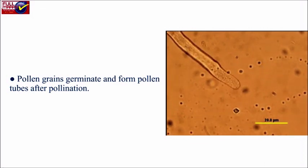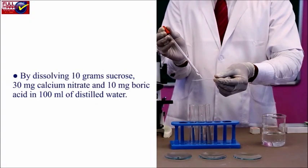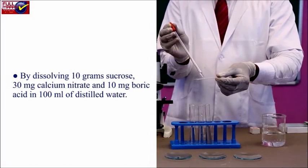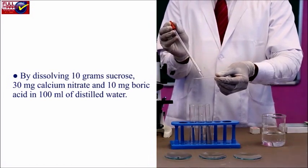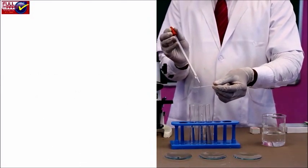Prepare the pollen germination medium by dissolving 10 grams sucrose, 30 mg calcium nitrate, and 10 mg boric acid in 100 ml of distilled water. Using a glass rod, stir the solution to mix it well.